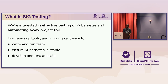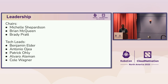It's particularly important that we can track and detect flakes, and make sure they don't end up in releases. On leadership, we have three chairs and five tech leads, with everybody working on various different parts of the SIG Testing ecosystem.